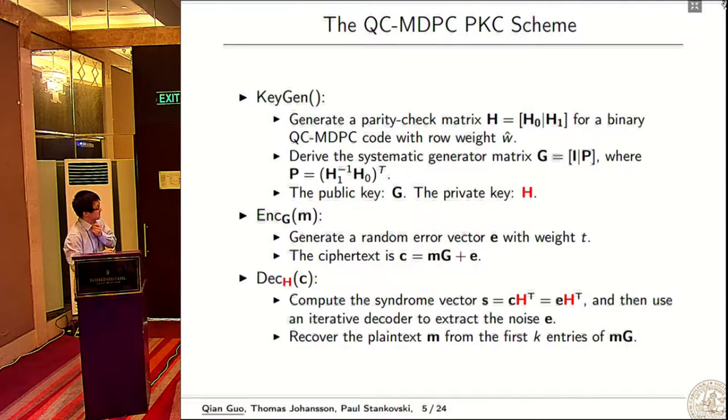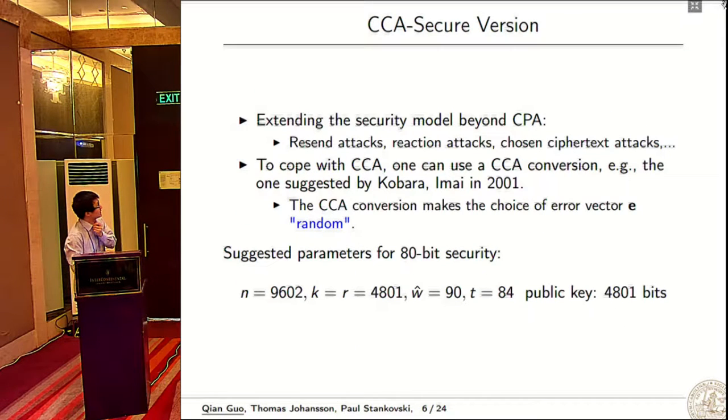This is a CPA-secure version. If we're extending the security model beyond CPA, there are many attacks like reaction attacks. If we want to achieve CCA security, one can use a CCA conversion like one suggested by Kobara and Imai, and there are many other conversions. These conversions make the choice of error vector E random.